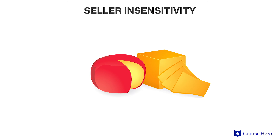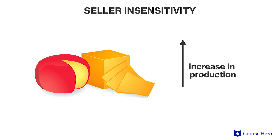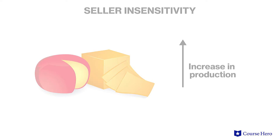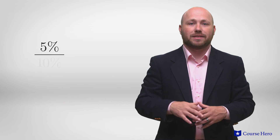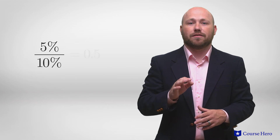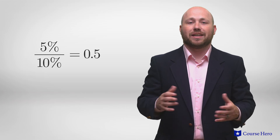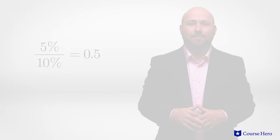Suppose there's a 10% increase in the price of cheese. Farms then decide to increase their production by 5%. This means there's a price elasticity of supply of 5% divided by 10%, for an elasticity of 0.5, which is considered inelastic.